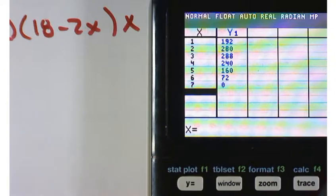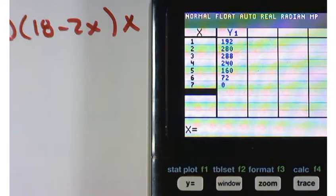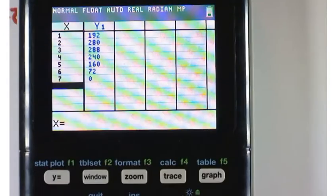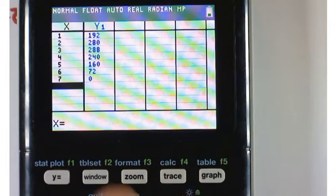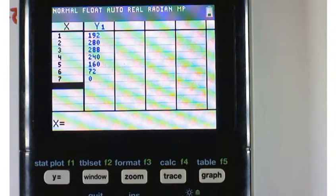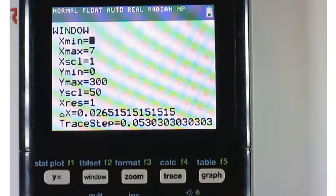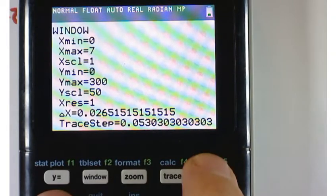Where does it look like our maximum is? Where should you make your cut? Yeah, looks like three, but it might be someplace between two and three or between three and four. We just don't know. Here's what we can do: let's take a look at it graphically. Before you hit the graph key, let's think about the window that we're going to set up.